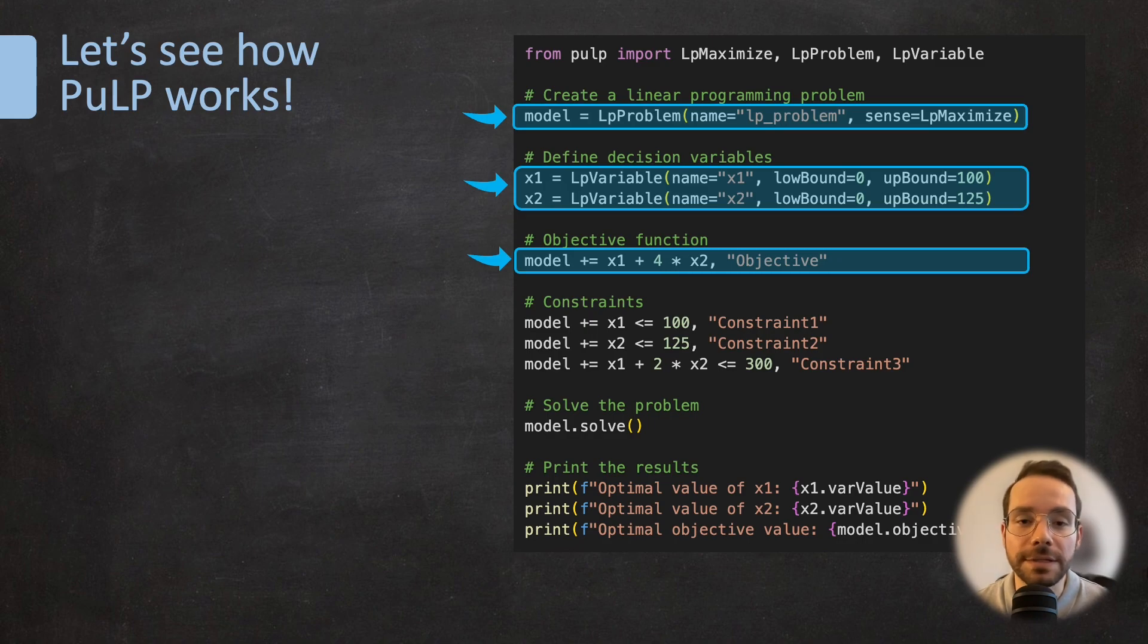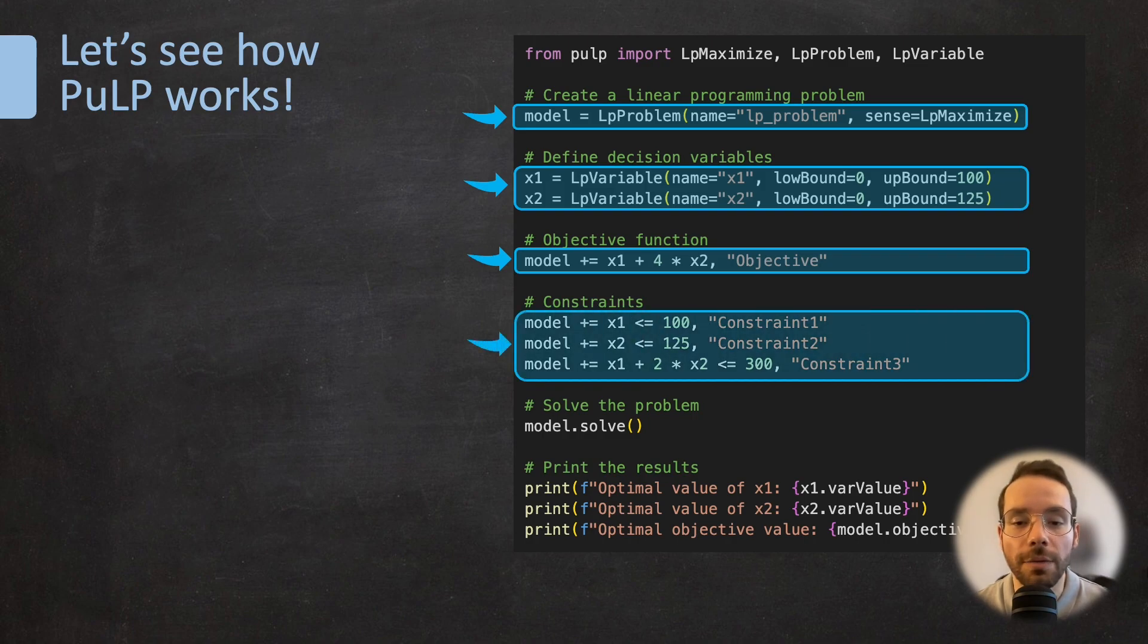And now it's time for us to define our objective function. And remember, we have previously specified that we are interested in maximizing this function. And after that, we are going to define our three inequality constraints one by one. And please note, when we use model plus equal the constraint, it's not like we are appending a tuple, but rather updating the model with new information. You're adding a new constraint, or you could be adding an objective to the existing LP problem object.